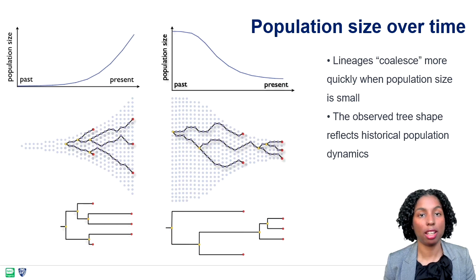Here, the number of lineages decreases at coalescence events and increases at sampling events.